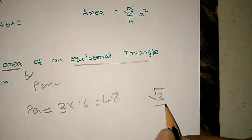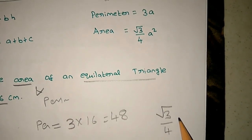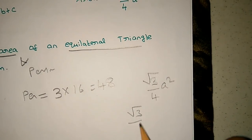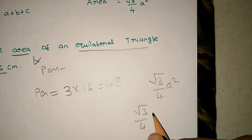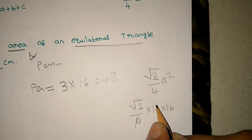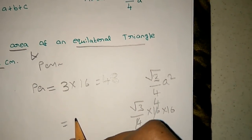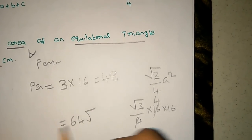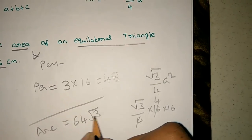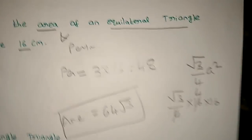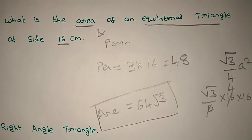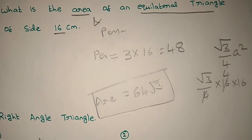Next, let's solve the area of the equilateral triangle. The formula is √3/4 × A². Substituting A = 16: √3/4 × 16 × 16. That gives us 64√3. So the area equals 64√3 square meters.